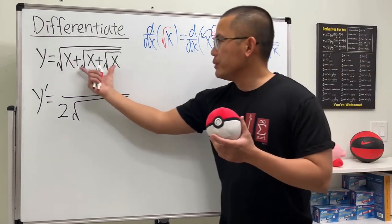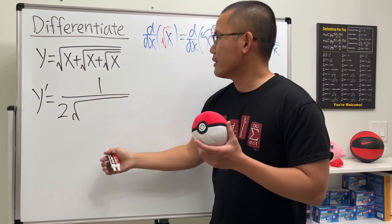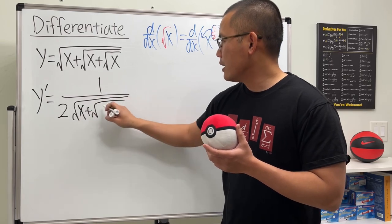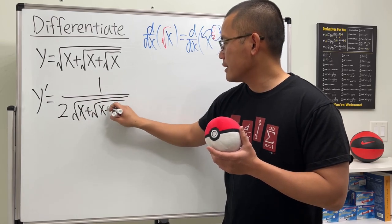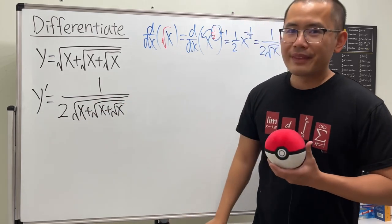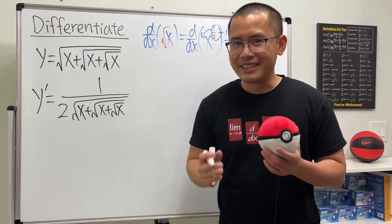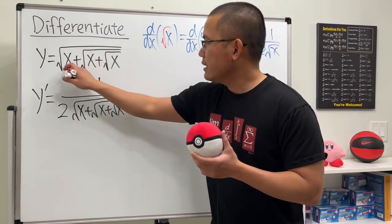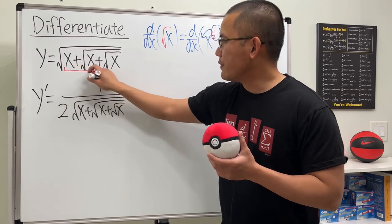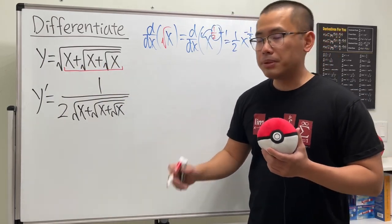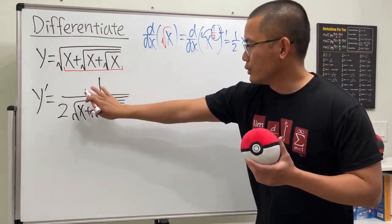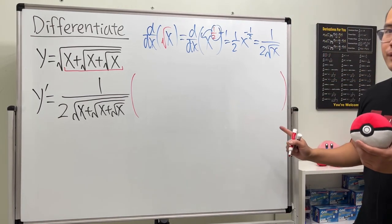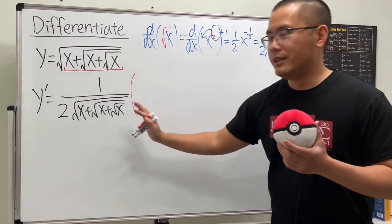We put the inside back here, so we have x plus the square root of x. Now it's time to use our chain rule — look at the inside. We will have to differentiate this and multiply. Let me open the big parentheses right now.